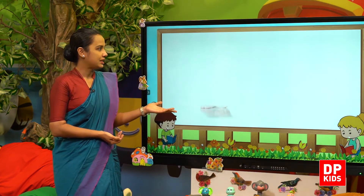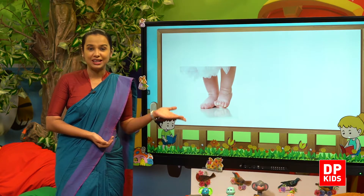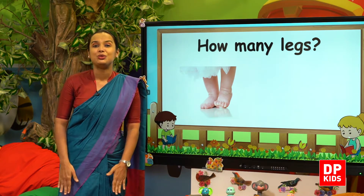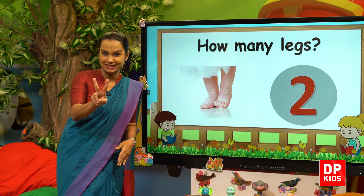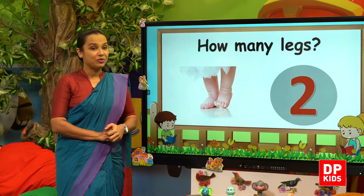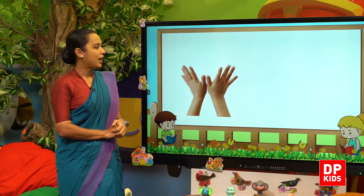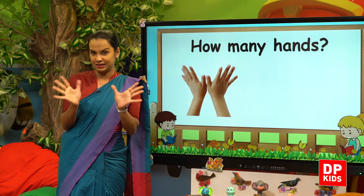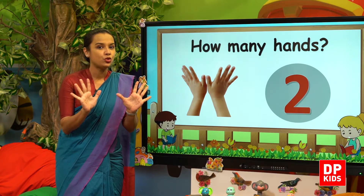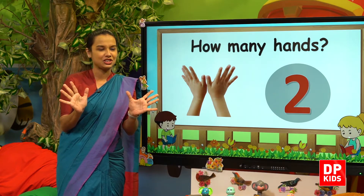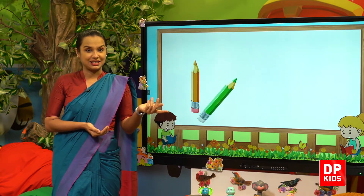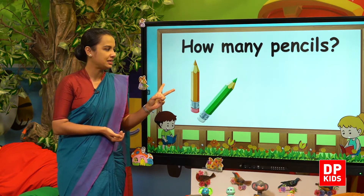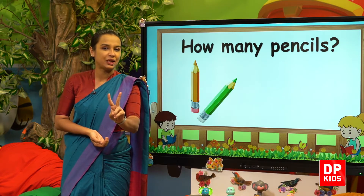Right. Next, let us see — oh, legs. How many legs have you? Yes, two legs. We have two legs. How many hands have you? Yes, we have two hands. Very good, children. Next, pencils. How many pencils are there? Yes, there are two pencils.